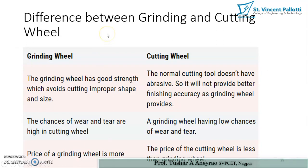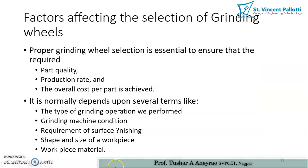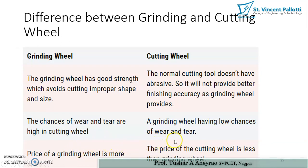The difference between a grinding wheel and a cutting wheel: a grinding wheel has good strength which avoids cutting of improper shape and size, whereas a cutting tool doesn't have abrasives and doesn't provide better finishing accuracy. The chance of wear and tear is high in a cutting wheel but low in a grinding wheel. The price of a grinding wheel is higher than that of a cutting wheel.